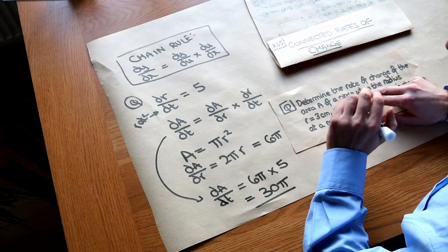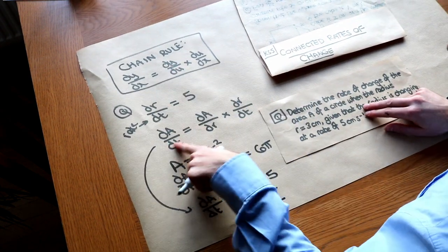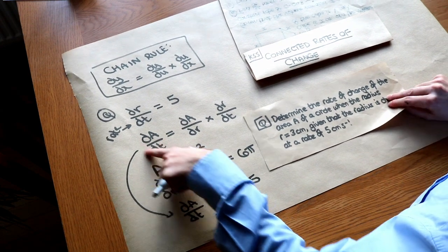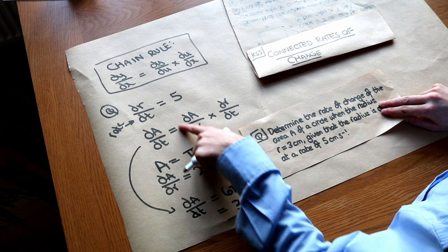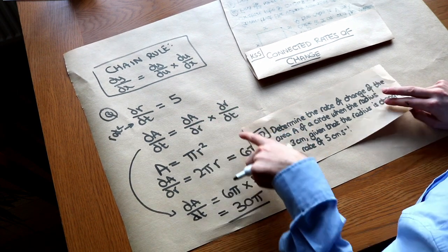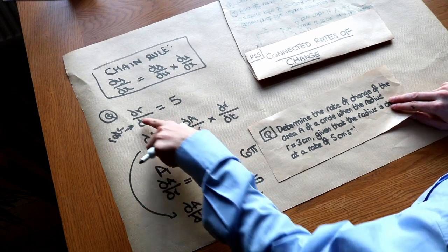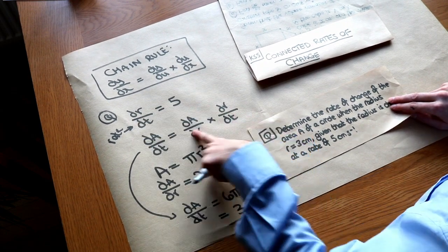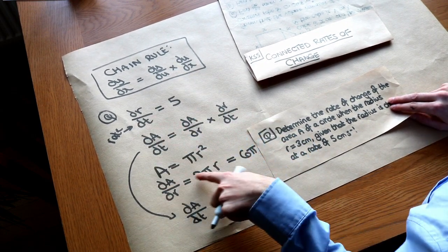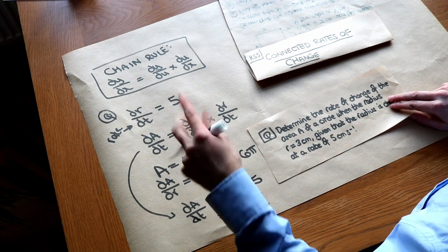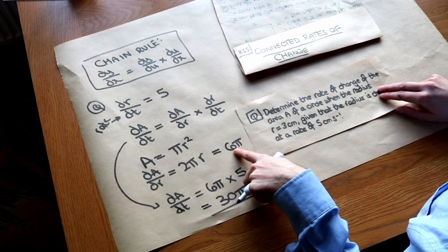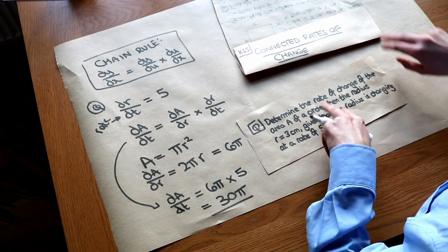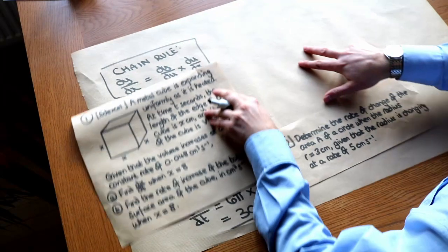Just to reiterate, we used the chain rule to write out a formula for what we're trying to find, in this case the rate of change of area, the dA over dt. Then we fill it in the way I described. One of these values is always given, in this case the 5 was given. The dA over dr we found by starting with some geometric type formula, in this case the area of a circle, differentiating and subbing in our given value, r is 3 in this case. Let's use that to solve this exam question.